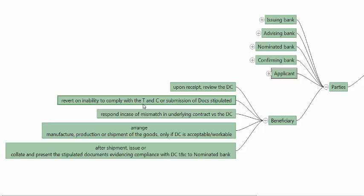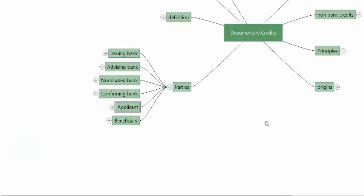If the beneficiary finds that terms cannot be met or documents cannot be submitted, they are not supposed to make shipment, because payment is not guaranteed by the issuing bank for non-compliance. After shipment, the beneficiary must collate and arrange to get the stipulated documents issued — documents that evidence compliance with the terms and conditions of the credit. These documents will usually be presented to the nominated bank.